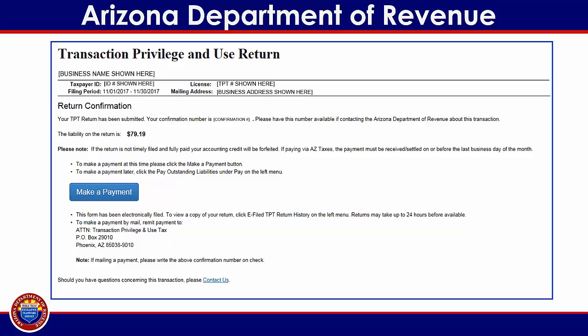This will take you to the return confirmation page. You may receive a pop-up window explaining that filing a return and submitting a payment are two separate processes, both of which must be completed for compliance. If you receive this message, click OK to close the window. On this page, you will receive your return confirmation number and total liability. If you wish to submit an electronic payment at this time, click on the blue Make a Payment button in the middle of the screen. If you wish to make your payment at another time, you may leave this screen. For more information regarding the electronic payment process, please visit www.azdor.gov or follow the step-by-step guidance provided in the Making Electronic Payment tutorial found at www.aztaxes.gov.